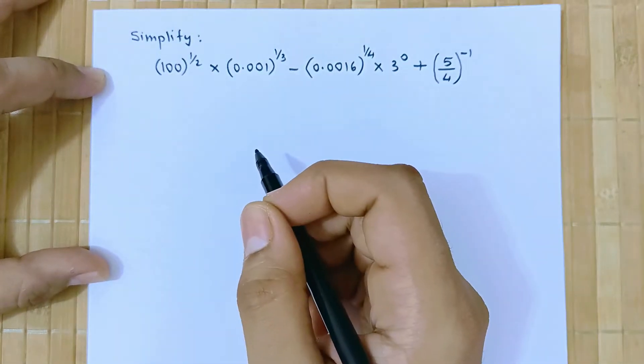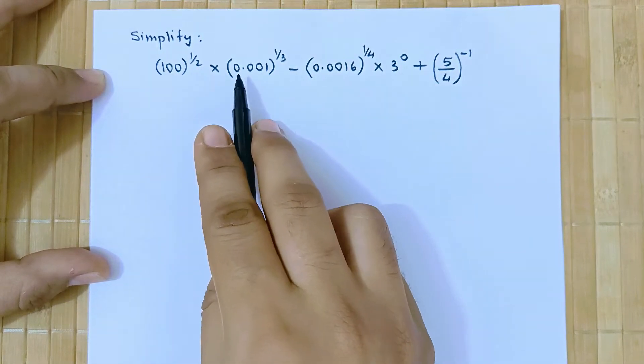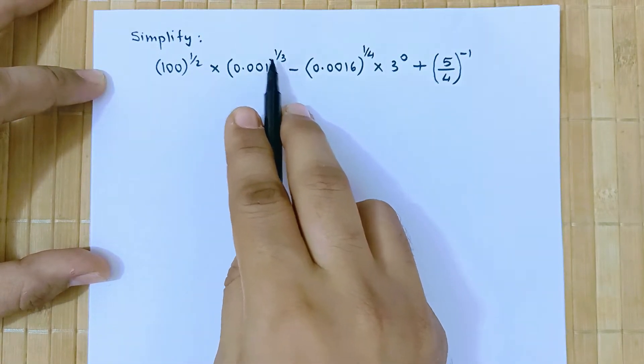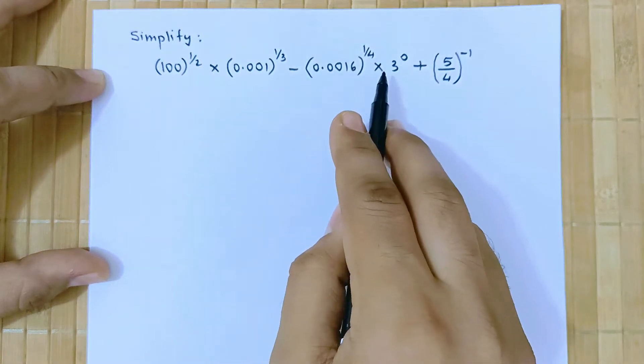Simplify the following expression. Here is 100 raised to half into 0.001 raised to 1 by 3 minus 0.0016 raised to 1 by 4 times 3 raised to 0 plus 5 by 4 raised to minus 1.